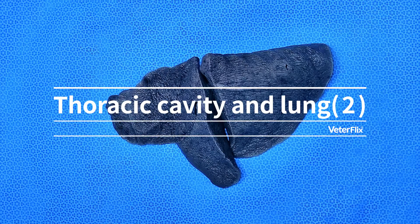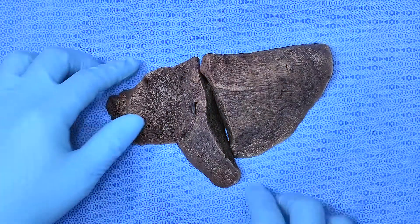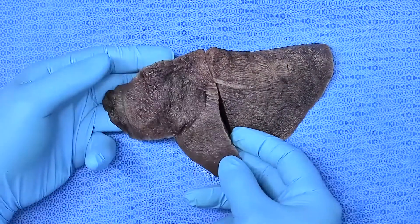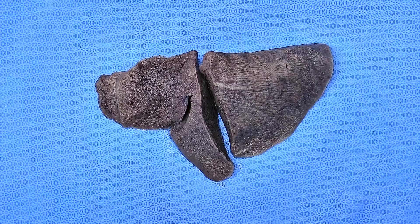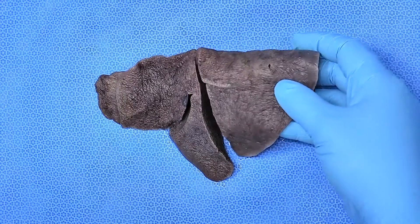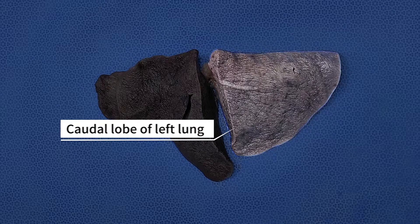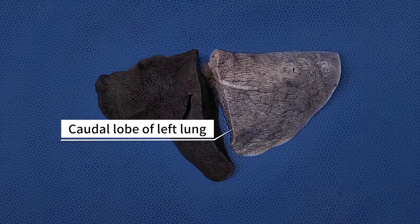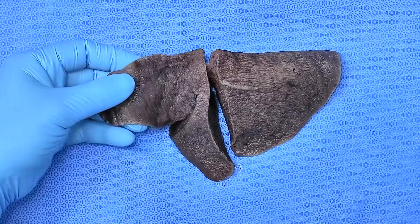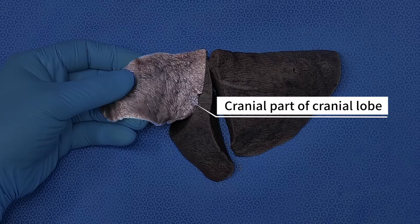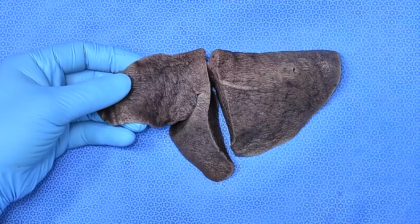Let's look at each lobe from the removed left lung. As we have briefly studied earlier, the lung is divided into cranial and caudal lobes. The cranial lobe is further divided into the cranial part and the caudal part.